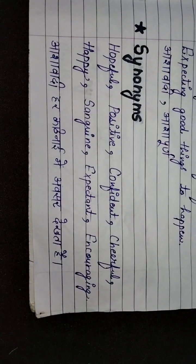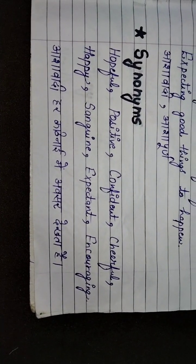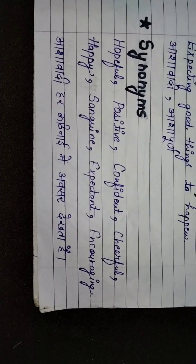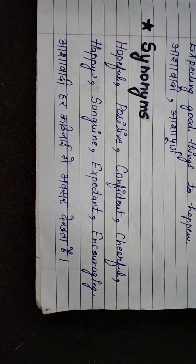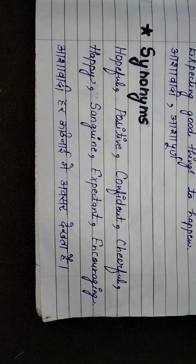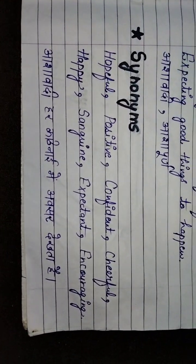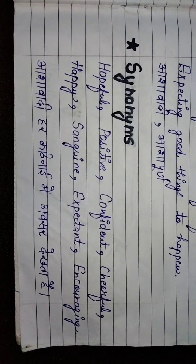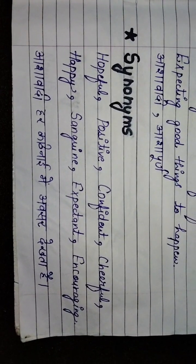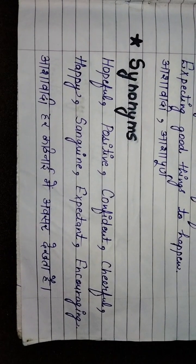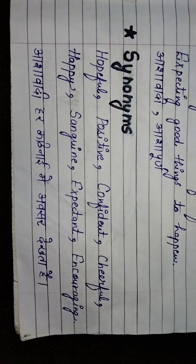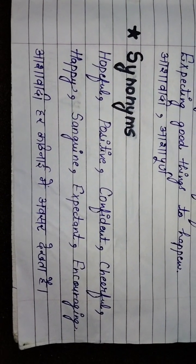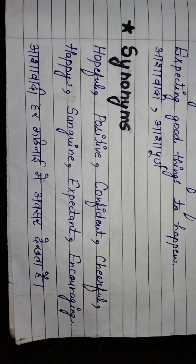Now let's talk about the synonyms of optimistic: hopeful, positive, confident, cheerful, happy, sanguine, expectant, and encouraging. आशावादी हर कठिनाई में अवसर देखता है — जो positive होता है towards life and the situations happening in life, वो हमेशा हर problem में भी एक opportunity को देखता है. Optimistic always sees opportunity in every problem — कोई भी परेशानी आती, उसमें भी वो positive रहता है और देखता है कि इसमें भी क्या कोई opportunity है.